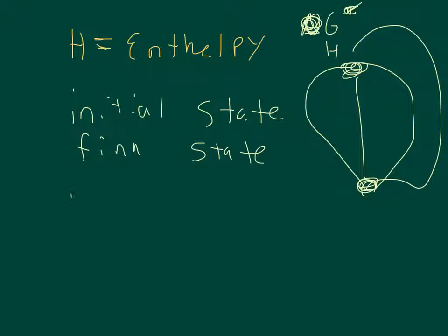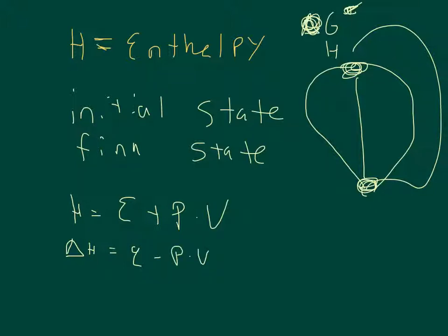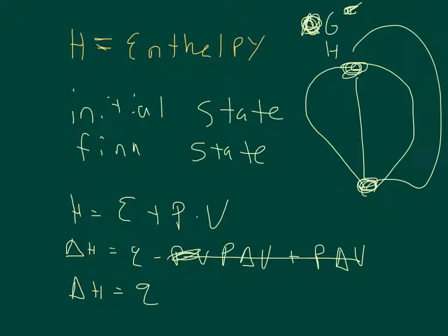Enthalpy is defined as the internal energy plus work done on the system: H = E + PV. If we want to know the change of enthalpy, ΔH = (Q - PΔV) + PΔV. When the pressure is constant, the PΔV terms cancel, so ΔH equals the heat transferred at constant pressure.